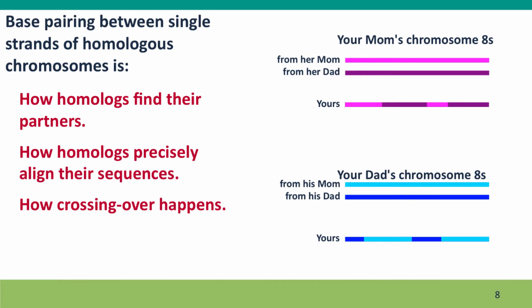Let's look at the results of crossing over before examining how it happens. Here are two chromosomes in your mom undergoing meiosis — a chromosome from her mom and one from her dad. The chromosome you inherited is a mixture of sequences, a recombinant. The same is true for the chromosome you inherited from your dad: it starts with a bit from his dad, then his mom, then his dad again, and another bit from his mom.